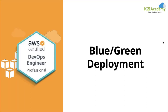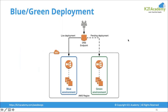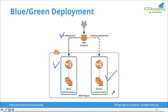Blue-green deployment is an advanced type of deployment which deploys a new feature without having any downtime. In blue-green deployment, you have one particular environment called the blue environment, where your application is running and all customer traffic is going to. You then create a parallel environment called the green environment with the new feature added.